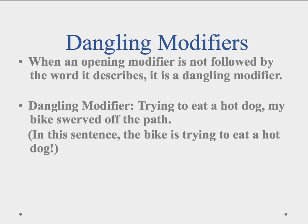Now for dangling modifiers. When an opening modifier is not followed by the word it describes, it is a dangling modifier. Here is an example: 'Trying to eat a hot dog, my bike swerved off the path.' 'Trying to eat a hot dog' is our opening modifier, but it's dangling because it is not immediately followed by the word it describes. It sounds like the bike is trying to eat the hot dog. In fact, 'I' am trying to eat the hot dog, but the pronoun 'I' doesn't even appear in the sentence. So we need to fix this by adding it.